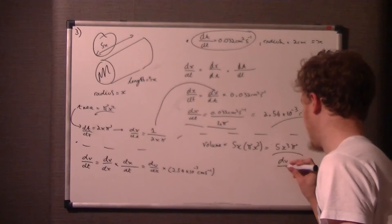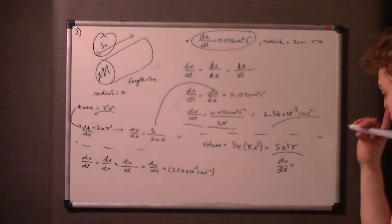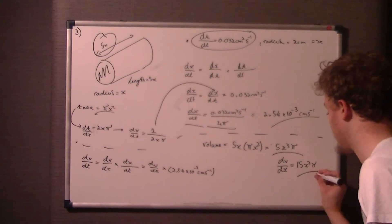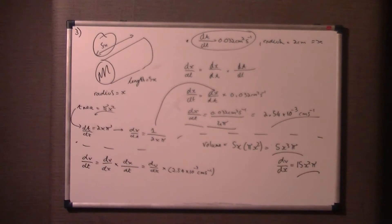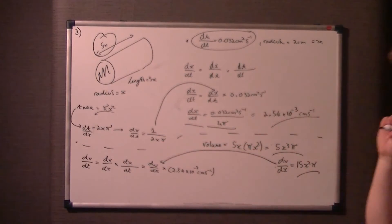Now we want dv/dx. So we just differentiate the volume equation with respect to x. Remember, π is just a constant. So that becomes 15x²π.